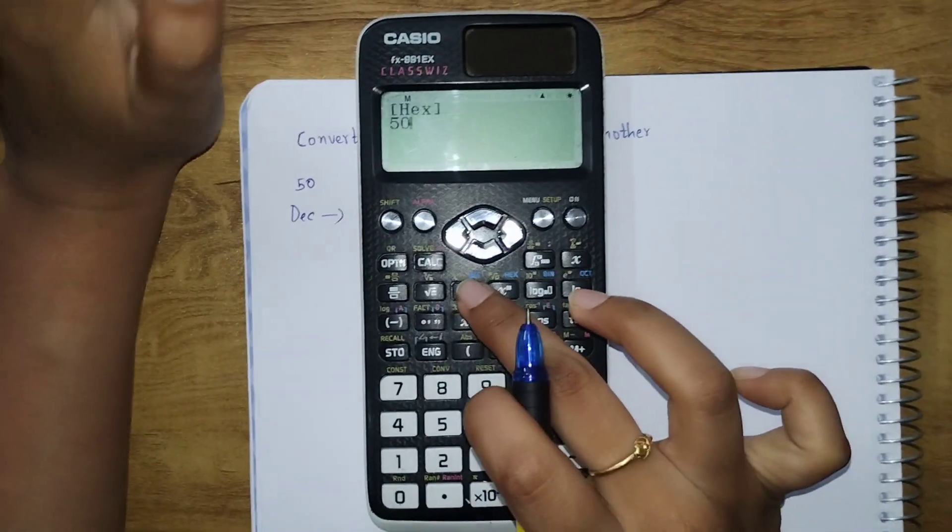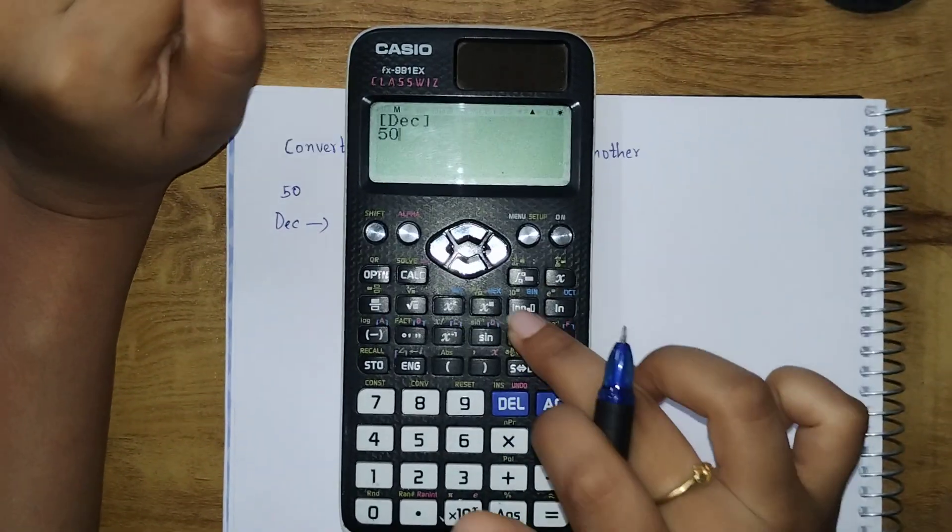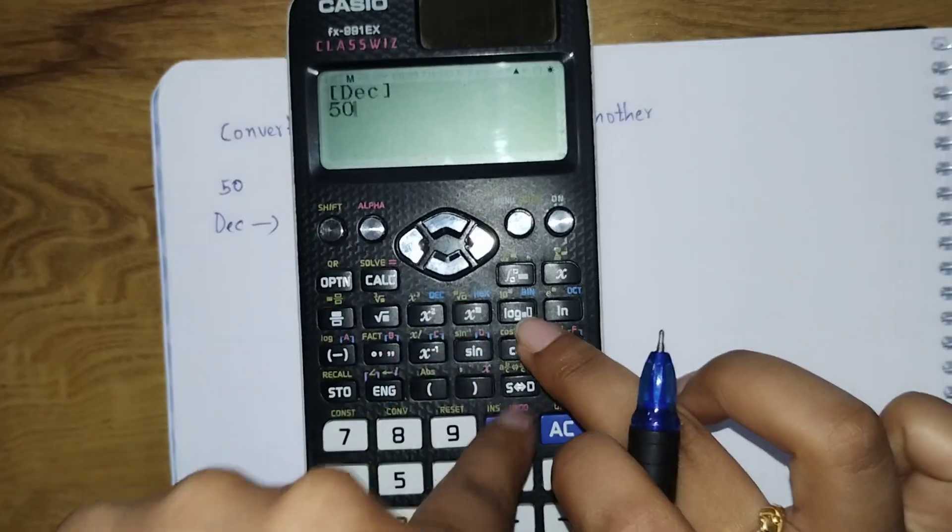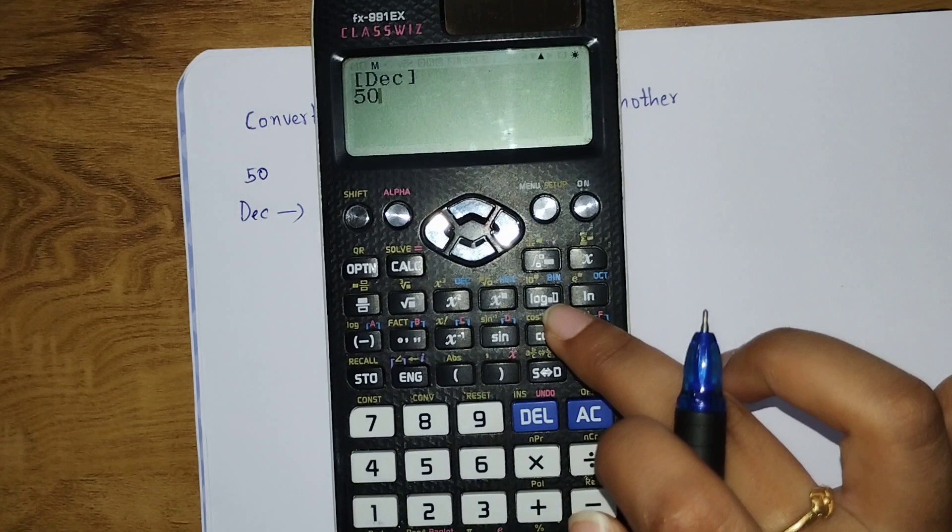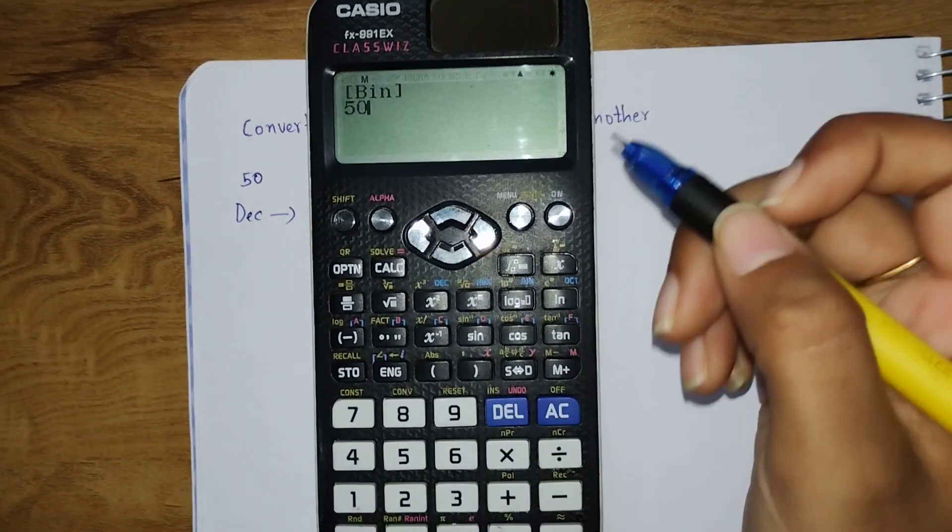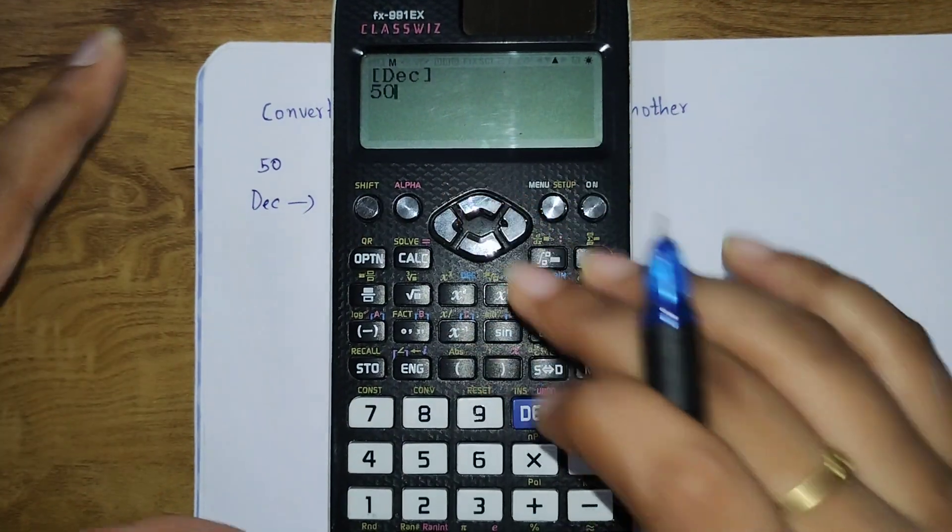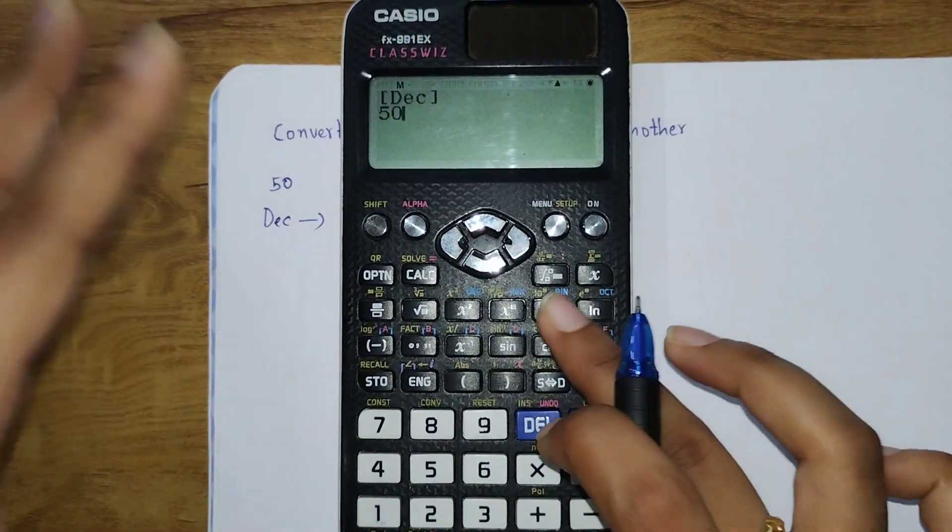Now we want the decimal form of this to binary form. So that is 50 into binary. Click on the binary button. This is decimal, we converted into hexadecimal. Now as binary, click on equals to, go to binary.